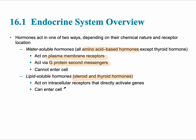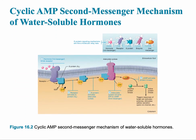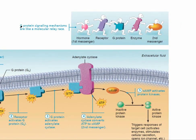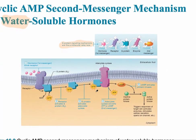Water-soluble hormones work through mainly five steps. The illustration simplifies this: the amino acid-based hormone binds to the receptor (step two), then the G protein acts as a messenger that tells an enzyme to release a second messenger. This process is shown in detail in the larger diagram.